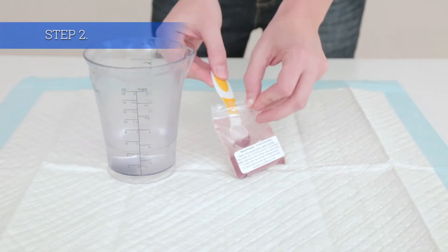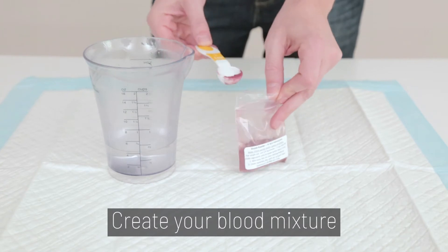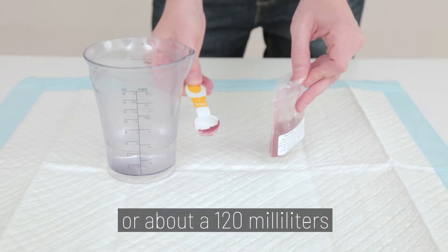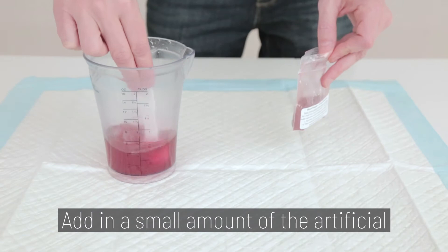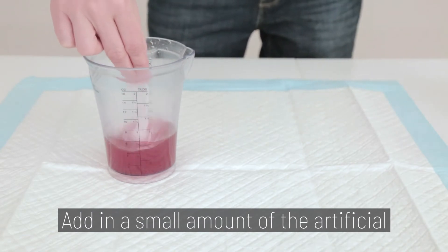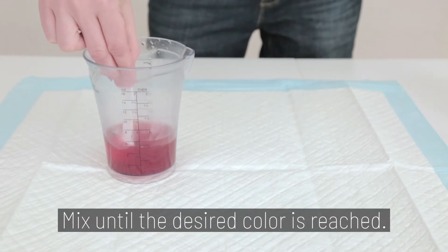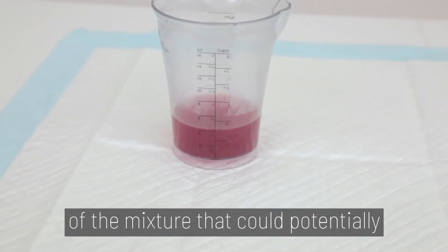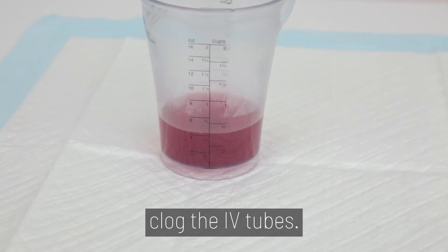Step 2. Create your blood mixture. Use a half a cup of water or about 120 milliliters. Add in a small amount of the artificial blood powder to the water. Mix until the desired color is reached and there's no sediment at the bottom of the mixture that could potentially clog the IV tube.